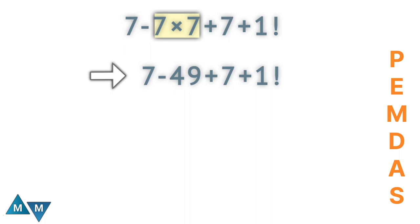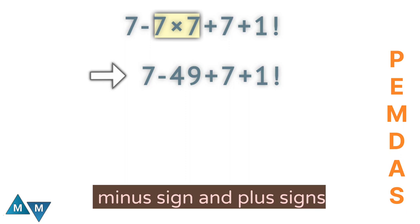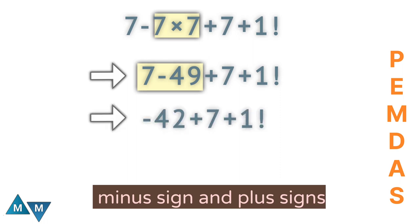Now we are left with minus and plus signs. Since both have the same priority, so first we perform the operation that appears first when moving from left to right. So 7 minus 49 gives minus 42. Now we have minus 42 plus 7 plus 1 factorial.